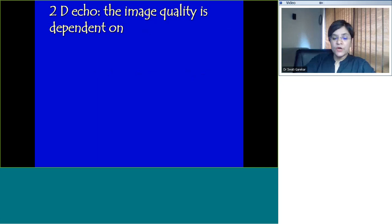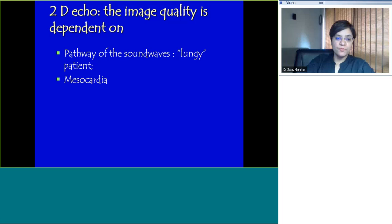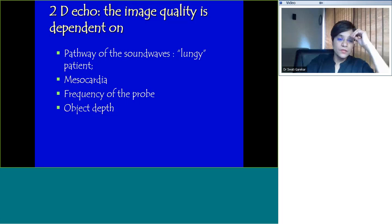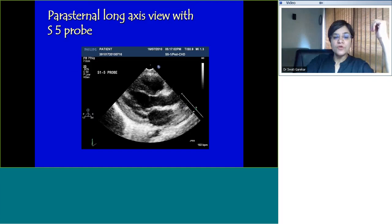Going back to a discussion on the physics of 2D echo. The image quality is dependent on the pathway of the sound waves. If it's a lungy patient, a lot of air in there, then you will not have good pictures. If your heart is behind the sternum, obviously that will be bad. The frequency of the probe and object depth also impact the image quality. Here's looking at a parasternal long axis view with an S5 probe. This is in a smaller child, an infant. You can see the heart beating properly and you can make out all the cardiac structures.